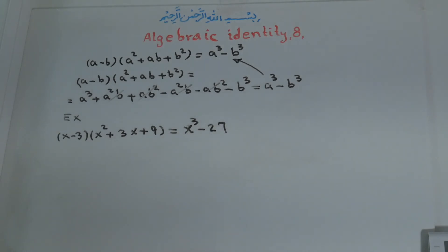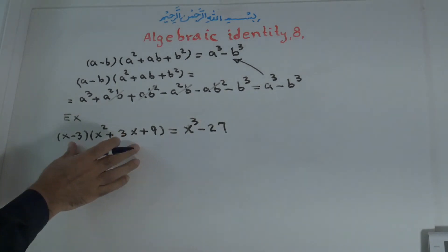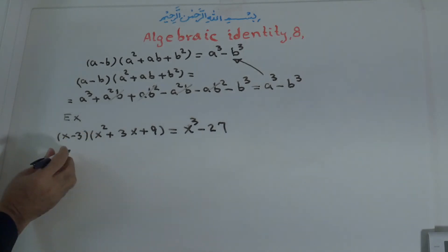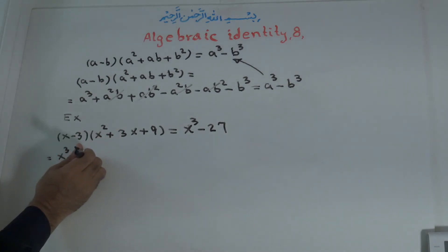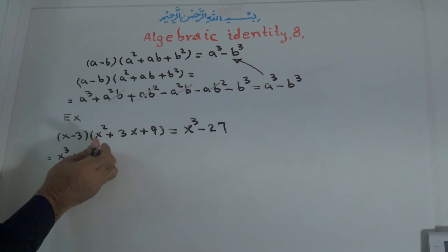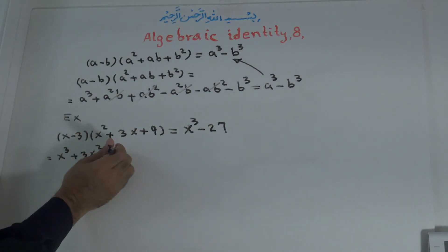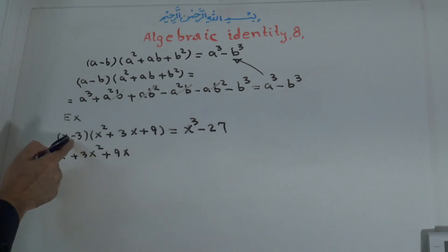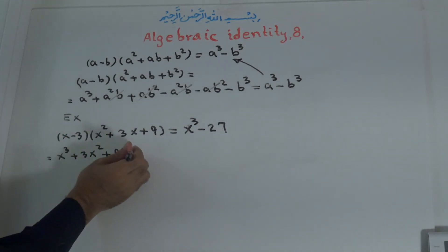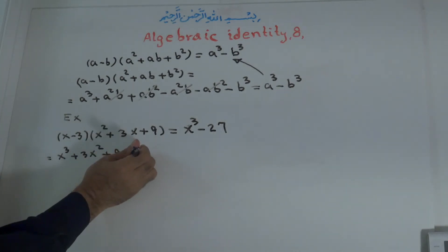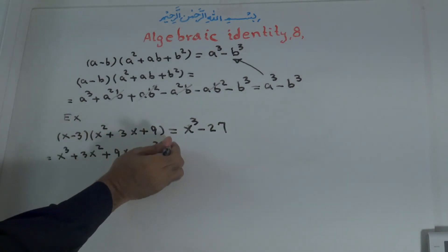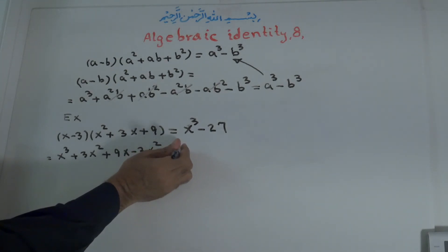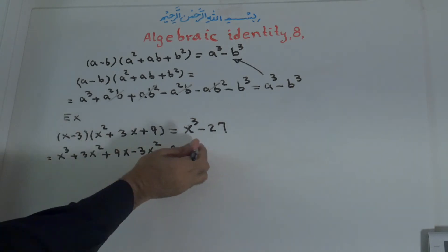Now to prove that this is correct, we multiply directly. X times X² equals X³. Positive times positive is positive: X times 3X is 3X². Positive times positive: X times 9 is 9X. Negative times positive is negative: 3 times X² is 3X². Negative times negative — 3 times 3X is 9X. And negative times positive is negative: 3 times 9 is 27.